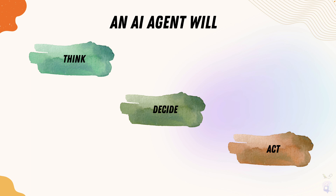Until our last section of this course, we tried to connect a large language model, asked a question, and got the response back. It's pretty much like ChatGPT — you ask a question to ChatGPT, it gives you the response. But what if you want to leverage the large language model even further? That's when the AI agent comes in.